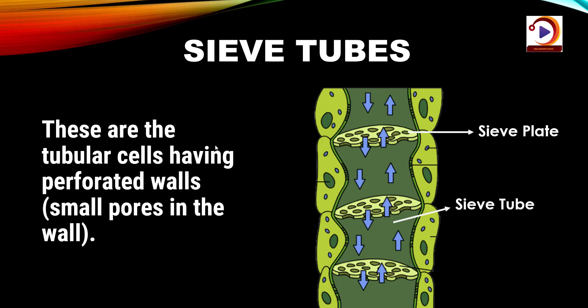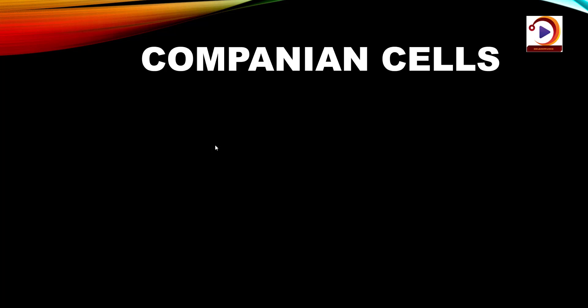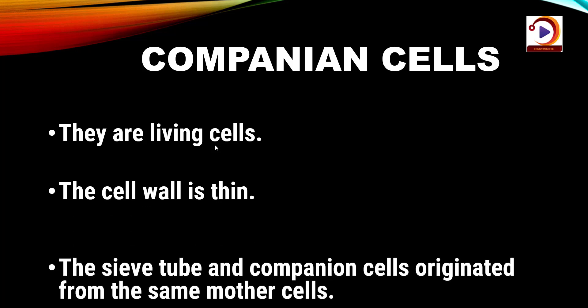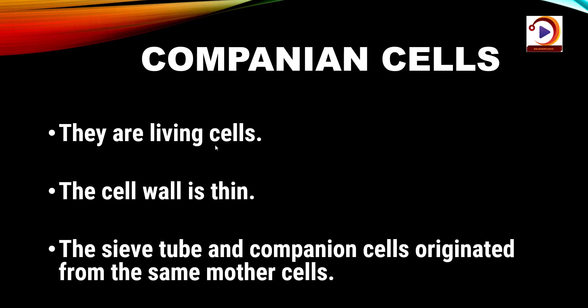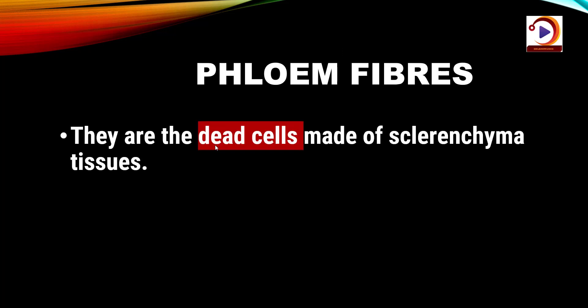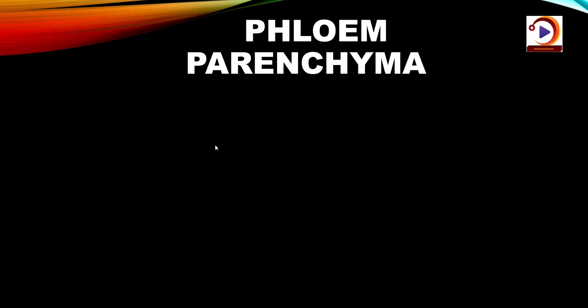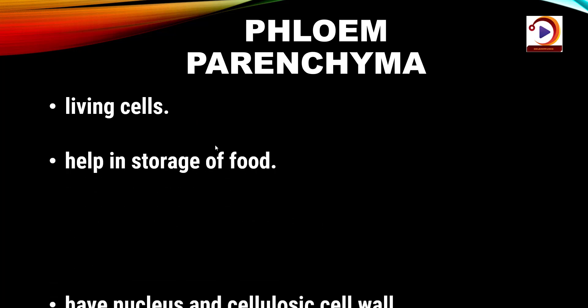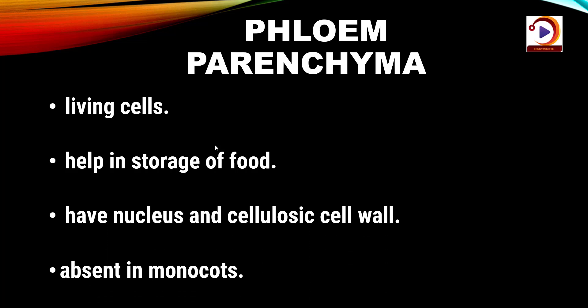Sieve tubes are tubular cells with perforated walls — the perforations help in movement of material. Companion cells are living cells with thin cell walls; the sieve tube and companion cell originate from the same mother cell. Phloem fibres are dead cells made up of sclerenchyma tissue — examples are jute, flax and hemp. Phloem parenchyma are living cells that help in storage of food; they have a nucleus and cellulosic cell wall, and phloem parenchyma is absent in monocots.